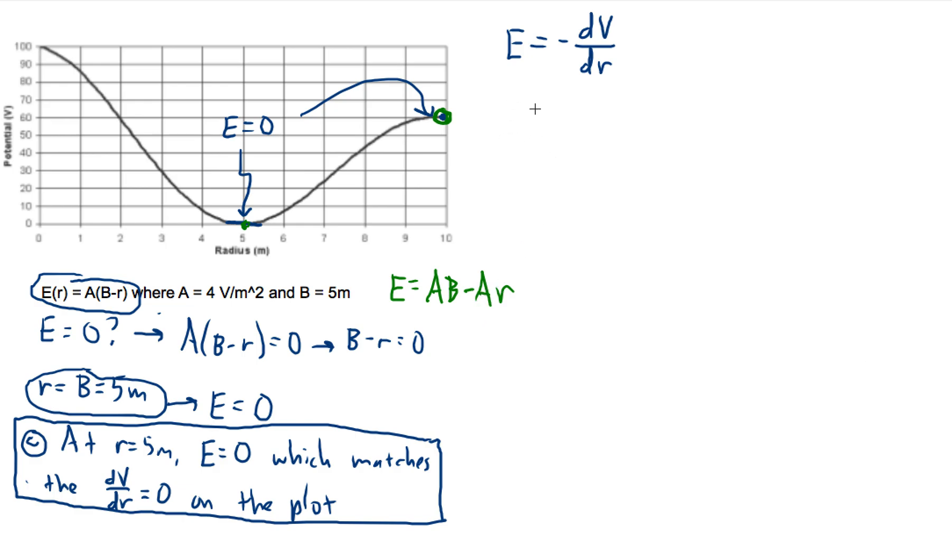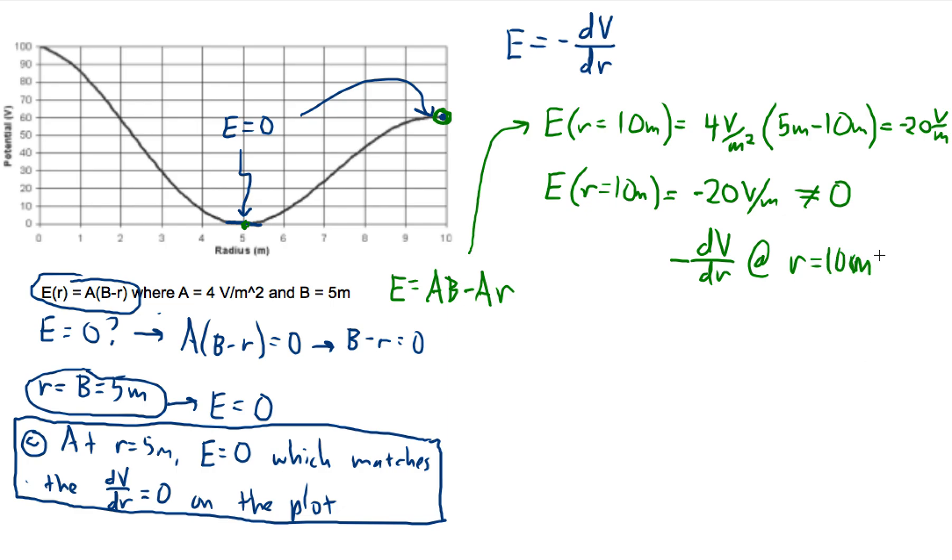You could basically, if you wanted to, say E at R equals 10 meters. You could calculate it: it's equal to four volts per square meter times five meters minus 10 meters. So that's going to be five minus 10, which is negative five meters. So you're going to have negative 20 volts per meter. And so E at R equals 10 meters is negative 20 volts per meter, which is not equal to zero. And this is what negative dV dr at R equals 10 meters is.